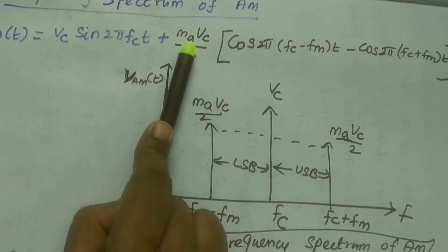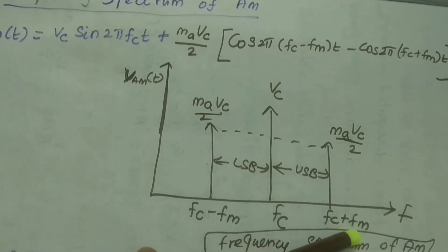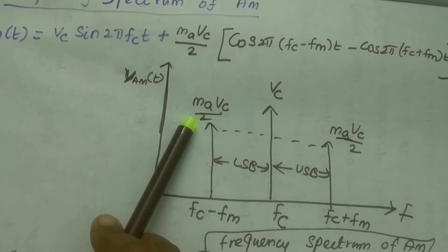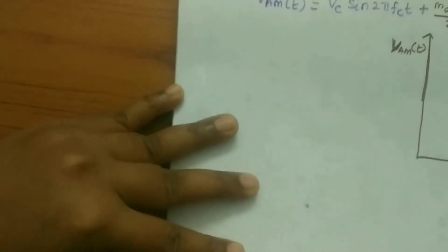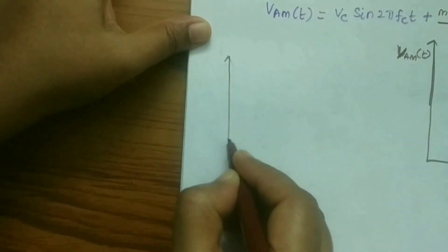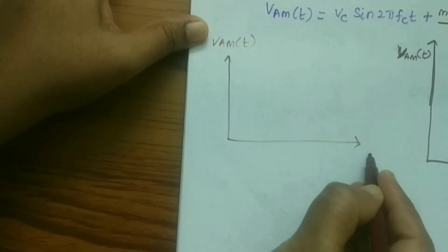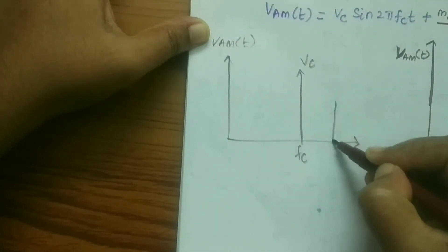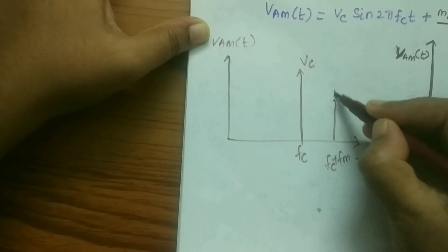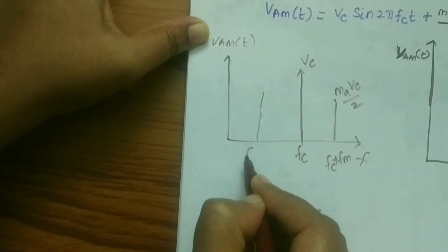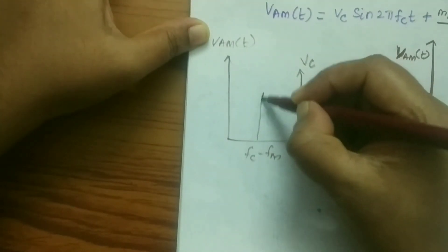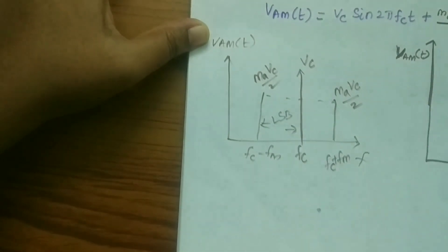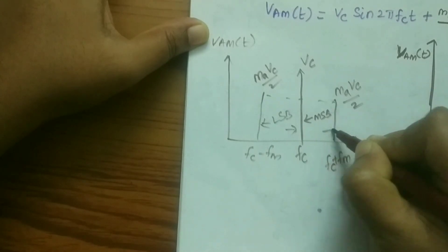The amplitude of the sideband frequency is MaVc/2. So Fc plus Fm is the upper sideband with corresponding amplitude MaVc/2, and Fc minus Fm is the lower sideband with corresponding amplitude MaVc/2. Drawing the frequency spectrum again: the carrier voltage is Vc at frequency Fc, the upper sideband USB is at Fc plus Fm with amplitude MaVc/2, and the lower sideband LSB is at Fc minus Fm with amplitude MaVc/2.